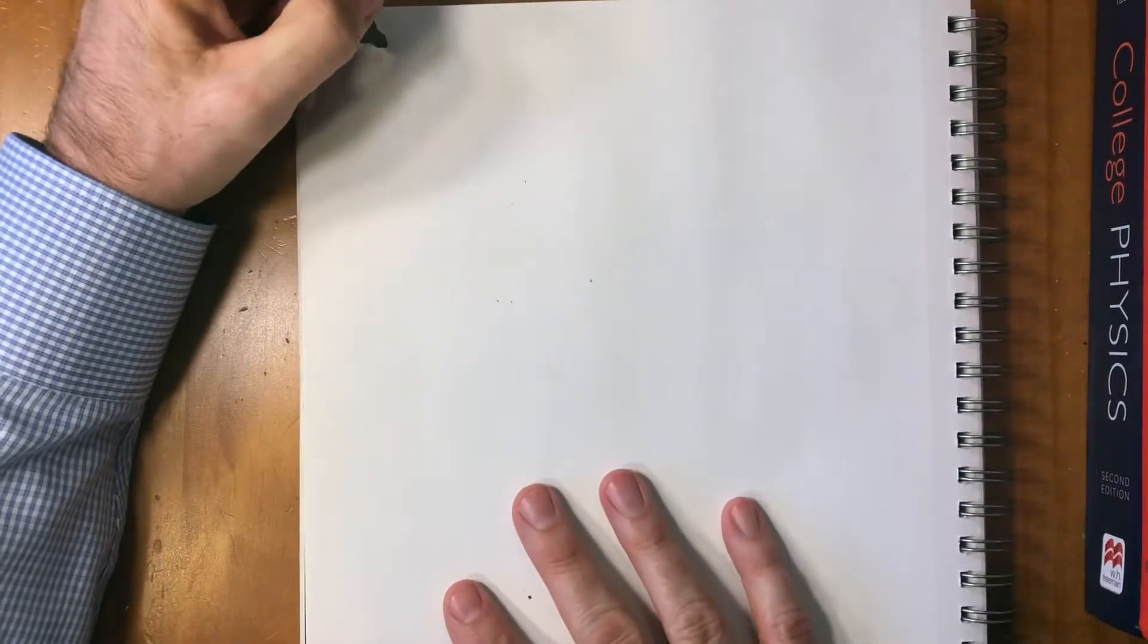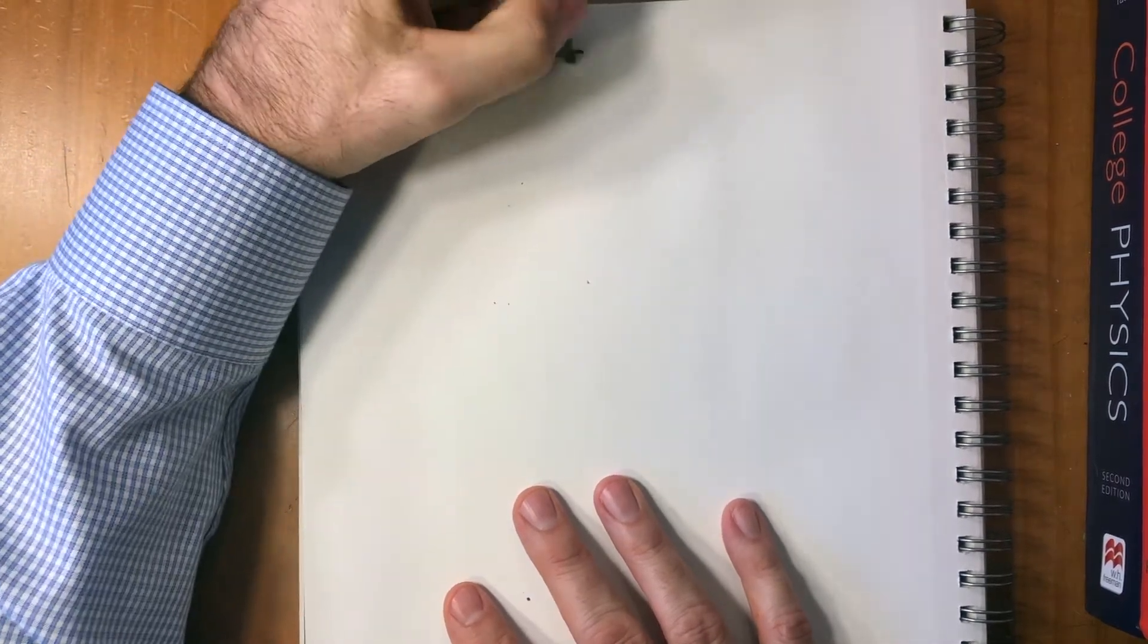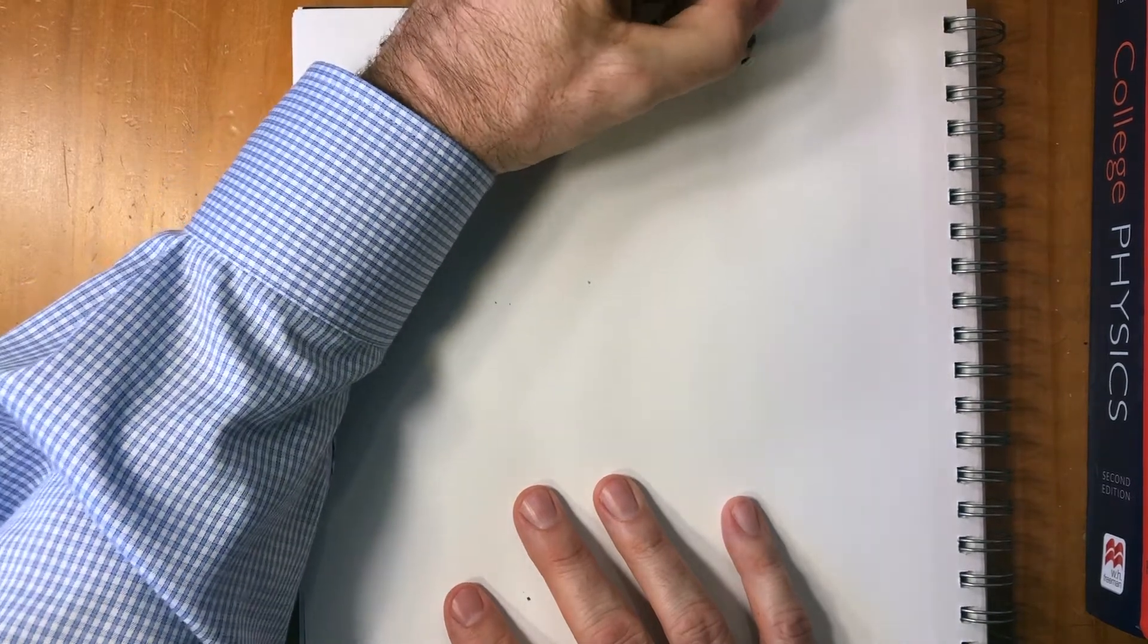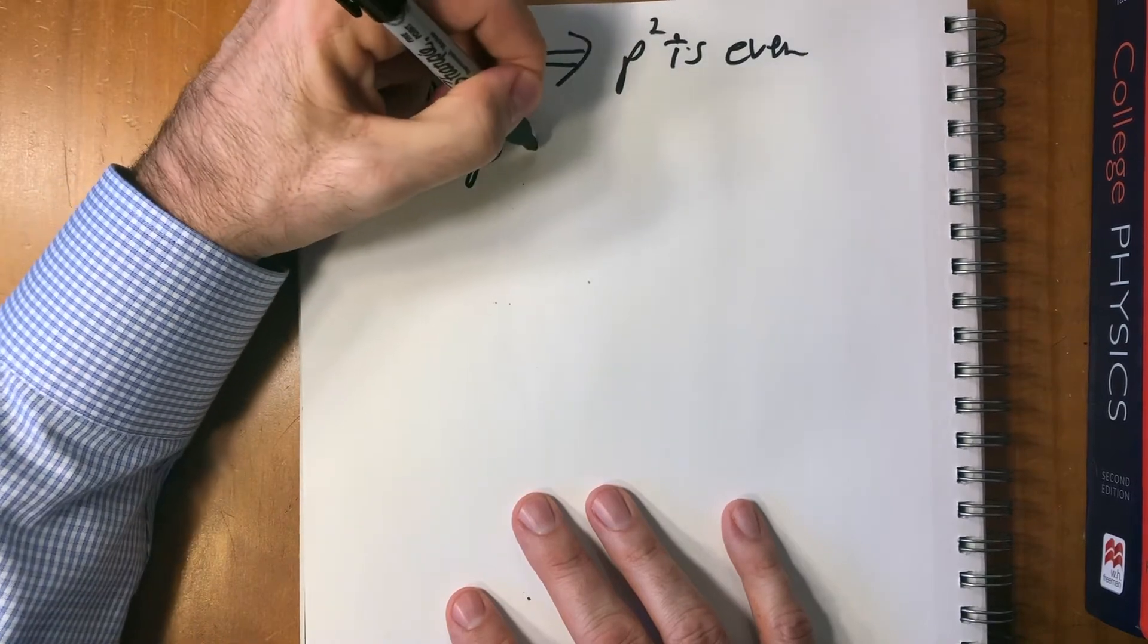So if the square is even, that means that p is even. We deduced that p² is even. P² is even, that means that p is even.